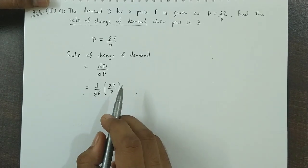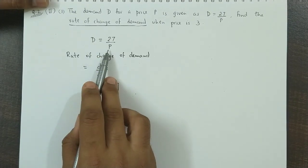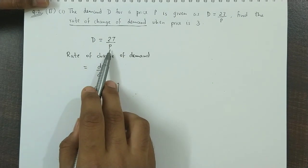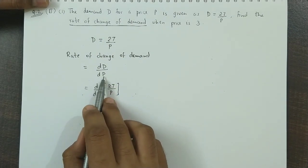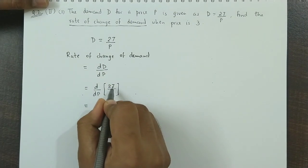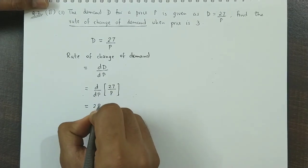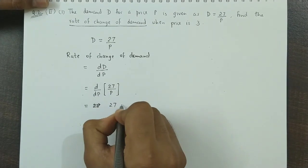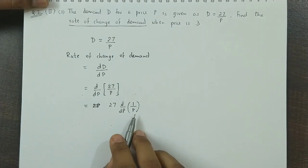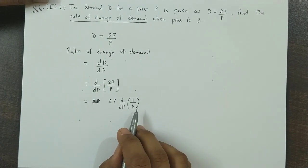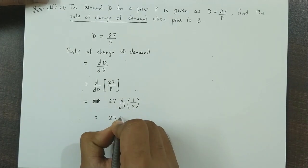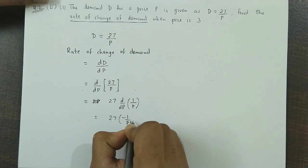So, instead of X and Y, normally here Y and here is X. So, we choose DY by DX. Here is D and here is P. So, we will find DD upon DP. That is the derivative of D with respect to P. Now, we know that the derivative of 1 upon X is minus 1 upon X square. So, the derivative of 1 upon P is minus 1 upon P square.